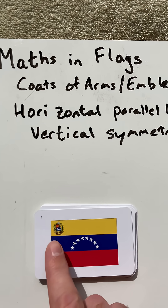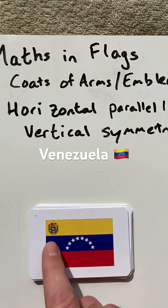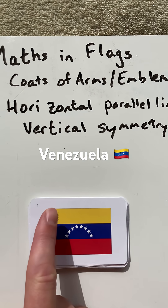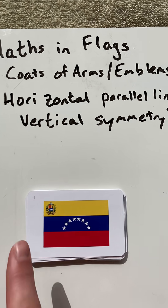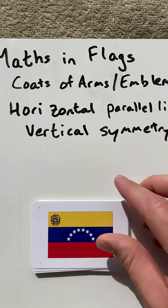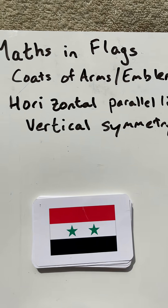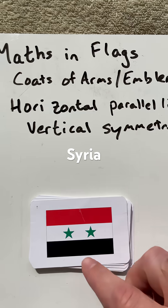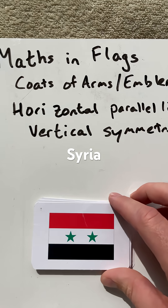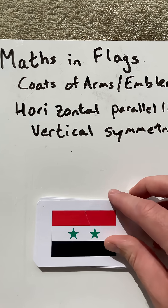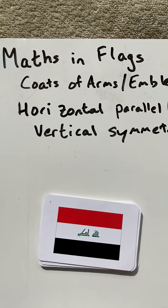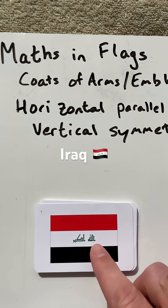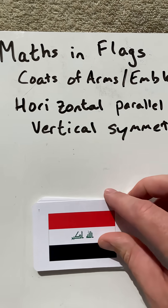Venezuela, because the coat of arms is to the top left, without that it would have a vertical line of symmetry. Syria absolutely has a vertical line of symmetry. Iraq, because of the writing, no longer does.